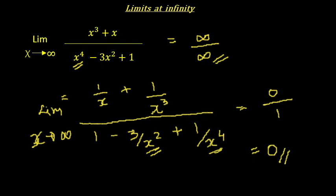This is kind of intuitive. If you look at the numerator, it is x³, and the denominator is x⁴. Whenever the power of the denominator is higher than the power of the numerator, as x tends to infinity the rational expression will tend to 0, and that's what we see here.